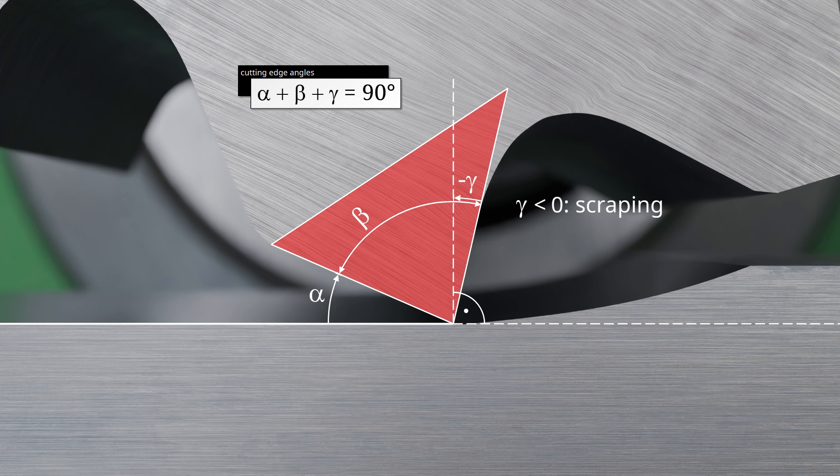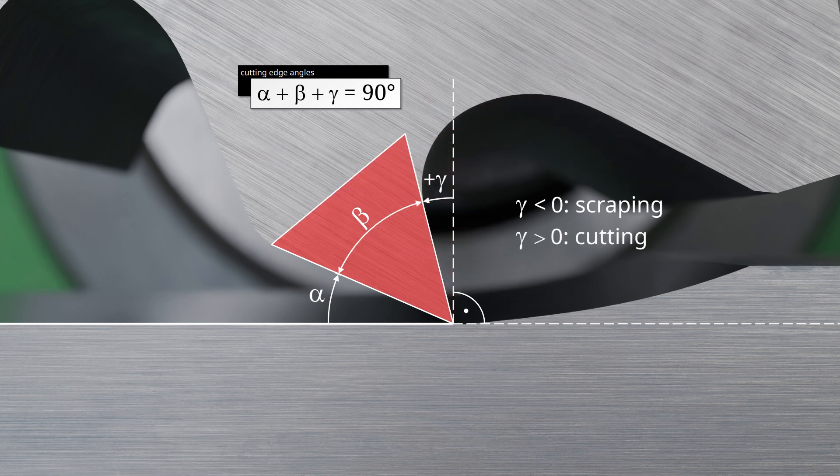Negative rake angles, and therefore large wedge angles, are used when machining very hard materials. Positive rake angles, on the other hand, have a cutting effect and are used when machining softer materials.